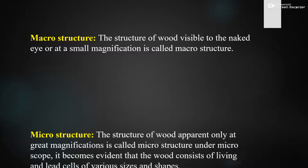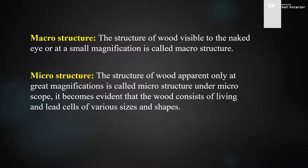What is meant by micro structure? The structure of wood apparent only at great magnification is called micro structure. Under a microscope it becomes evident that the wood consists of living and dead cells of various sizes and shapes. We cannot see the details of the structure of a tree with our naked eye; if we see it with magnification and in more detail, that is the micro structure.